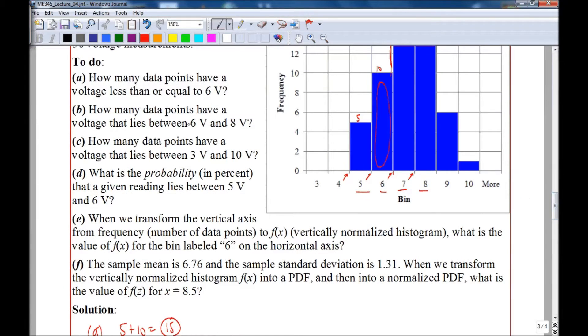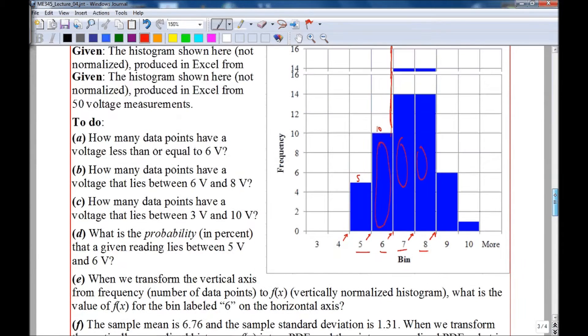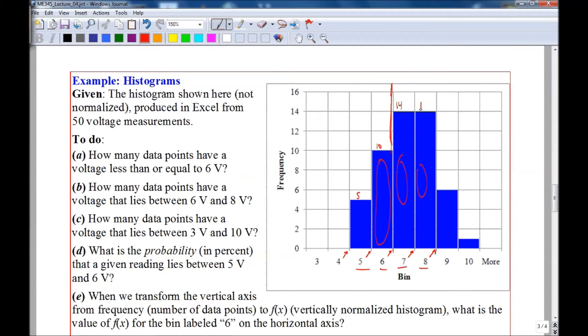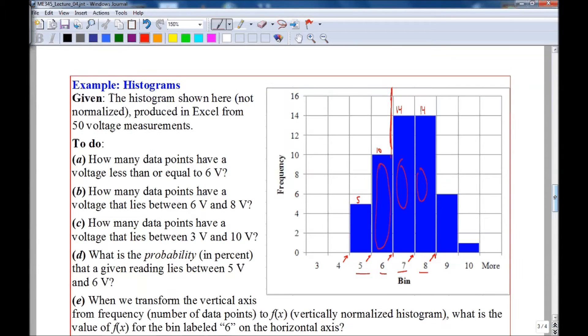Part B: How many data points have a voltage that lies between six and eight volts? Well, again six is here, eight is here, so we would add these two and those both happen to have 14 points in each of those bins, so for part B we would write 14 plus 14 equals 28.